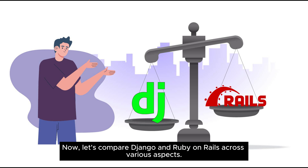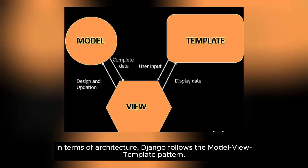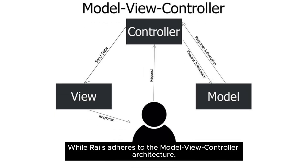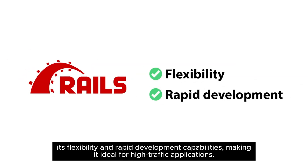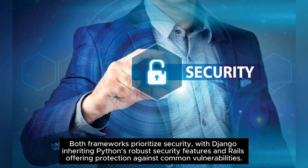Now let's compare Django and Ruby on Rails across various aspects. In terms of architecture, Django follows the model-view template pattern, while Rails adheres to the model-view controller architecture. When it comes to scalability and speed, Rails shines with its flexibility and rapid development capabilities, making it ideal for high-traffic applications. Both frameworks prioritize security, with Django inheriting Python's robust security features and Rails offering protection against common vulnerabilities.